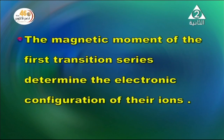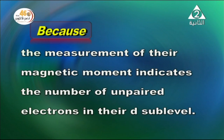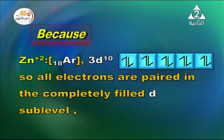The magnetic moment of the first transition series determines the electronic configuration of their ions because measuring the magnetic moment indicates the number of unpaired electrons in the D sub-level. Zinc chloride is diamagnetic but manganese chloride is paramagnetic because Zn2+ has configuration [Ar] 3d10 with all electrons paired in the completely filled D sub-level.